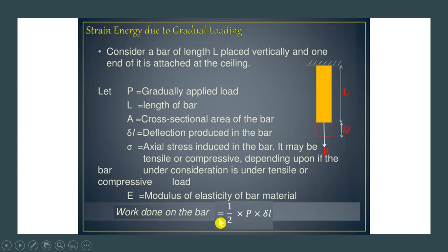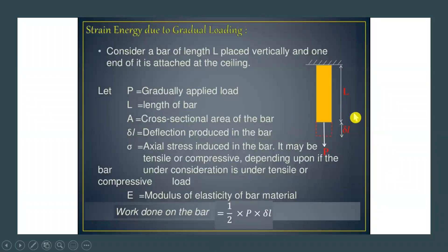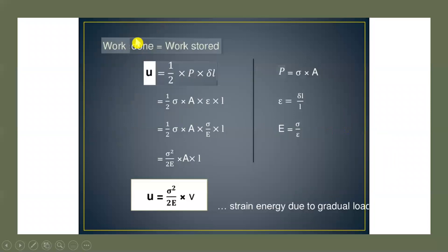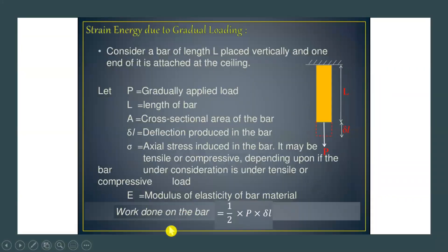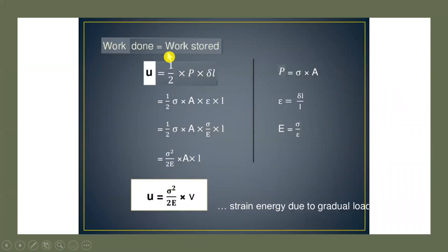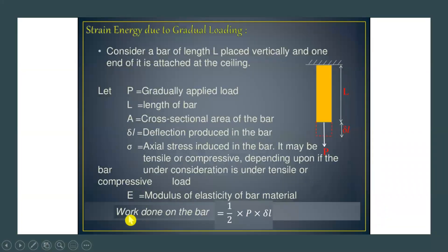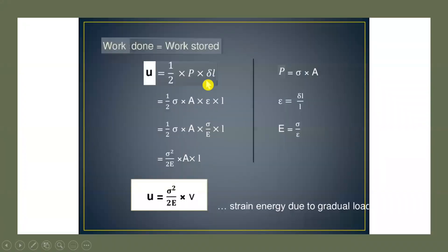Assuming no energy loss — that is, the body is a perfectly elastic body — the work done by the external force equals the work stored internally. Therefore, the external work done by force P equals the internal energy stored, which is the strain energy U. So strain energy U = (1/2) × P × dL, and internal work stored is denoted by the letter u.